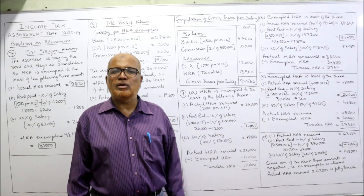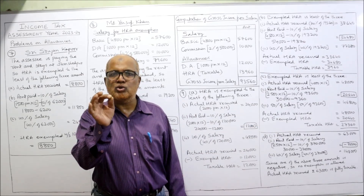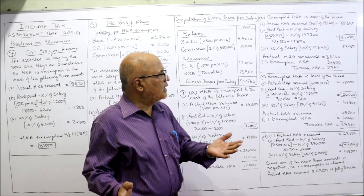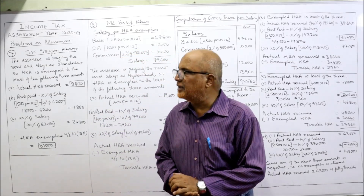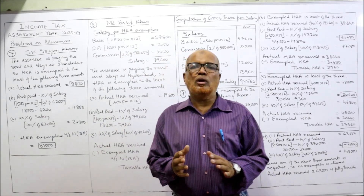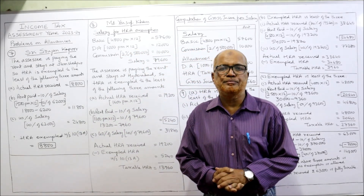That important point must be noted: if any one of the three amounts is negative, actual HRA received is fully taxable with no exemption. In this video, three problems — the 7th, 8th, and 9th — have been completed. We will continue with the next problem in the next video.